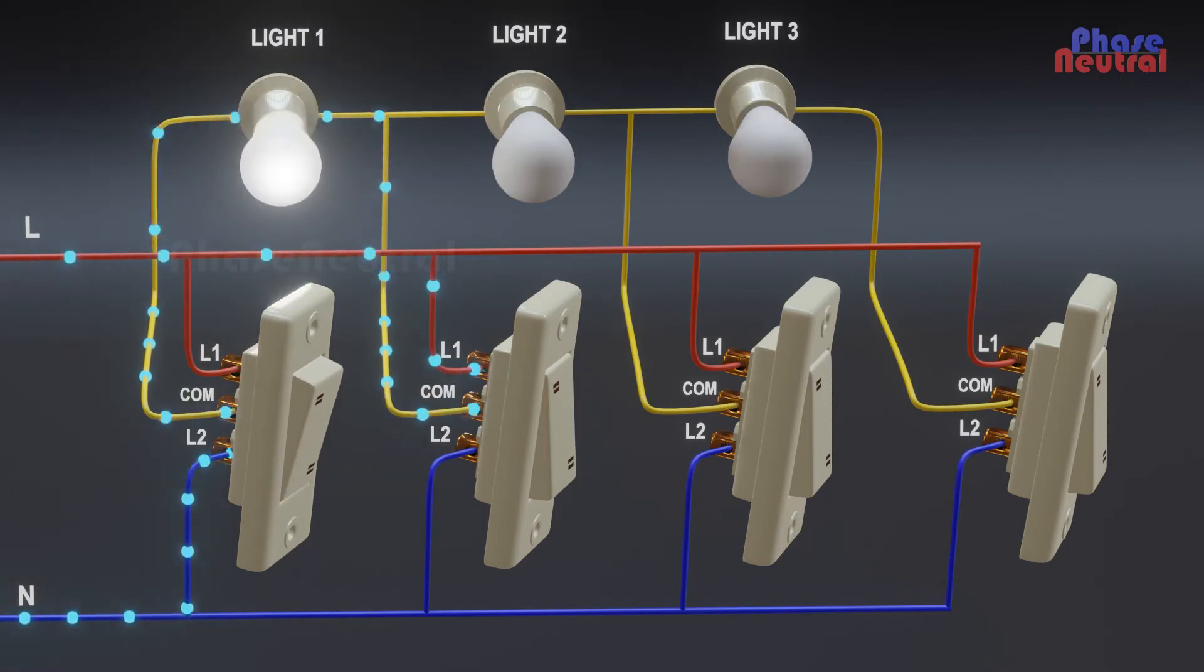When the first switch is in on position, the current flows through second switch common terminal to first bulb.